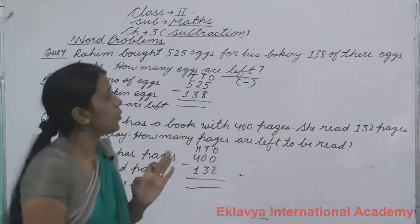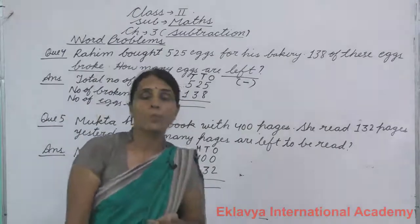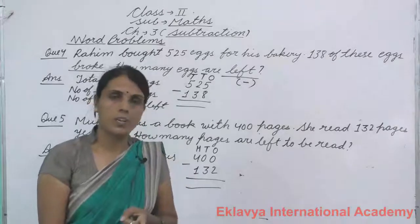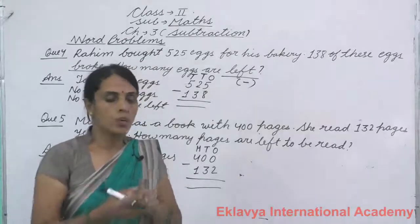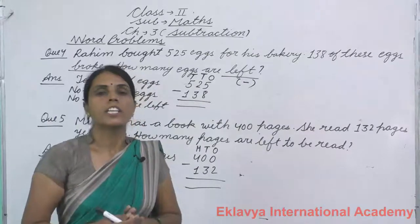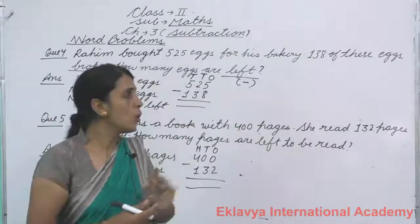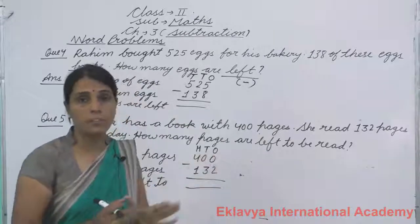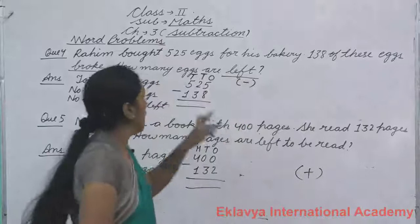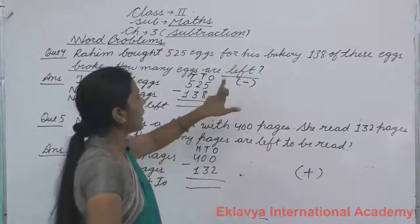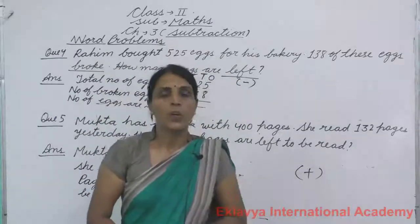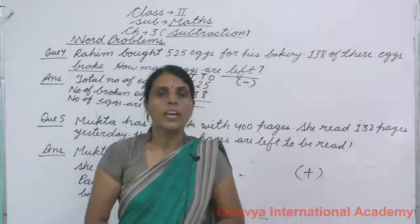I told you two types of word problems: addition and subtraction. If we are talking about total, all, or all together, in that condition we will do addition. And for the rest, like 'left', we will do subtraction. Thank you and have a nice day, students.